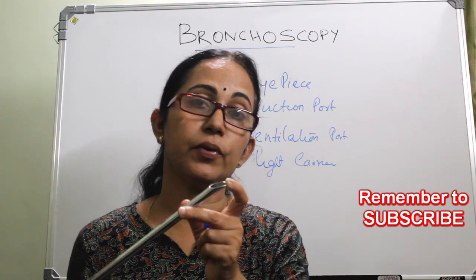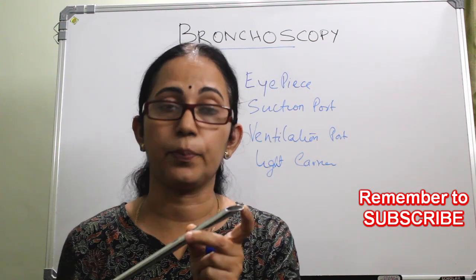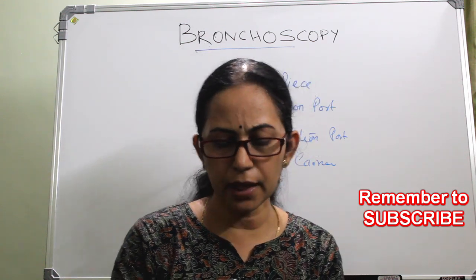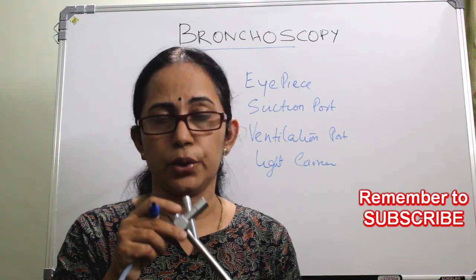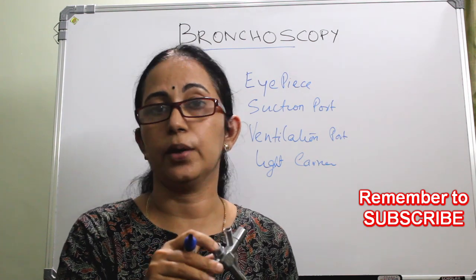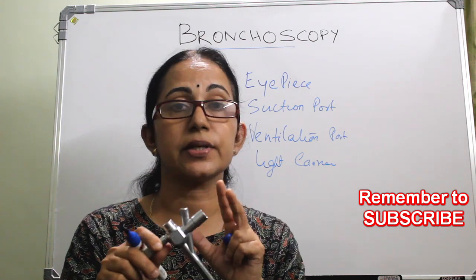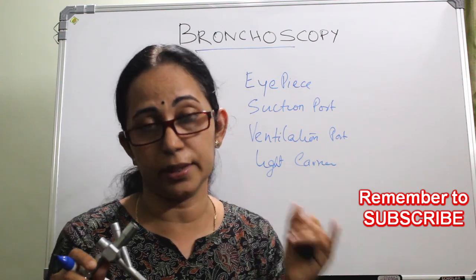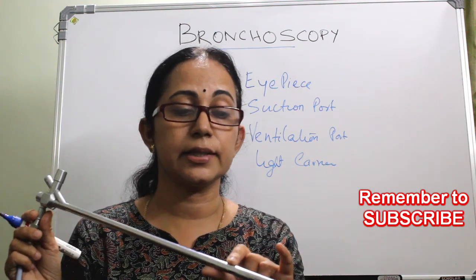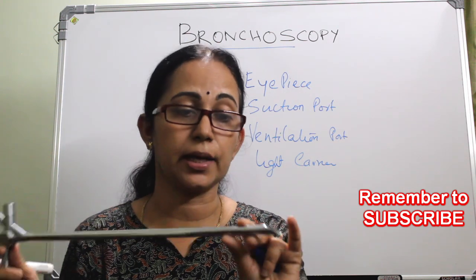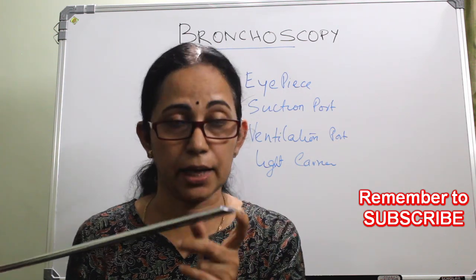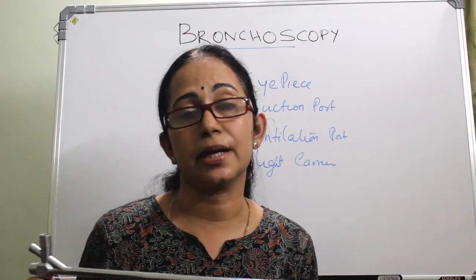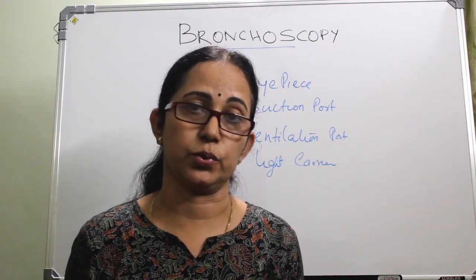The tip of a bronchoscope is pointed or sharp, whereas the esophagoscope's tip is blunt. The bronchoscope is shorter and has a narrower lumen than an esophagoscope. So the differences are: the bronchoscope is shorter with a narrow lumen, it has side ventilation holes, and the tip is sharp — whereas the esophagoscope tip is blunt.